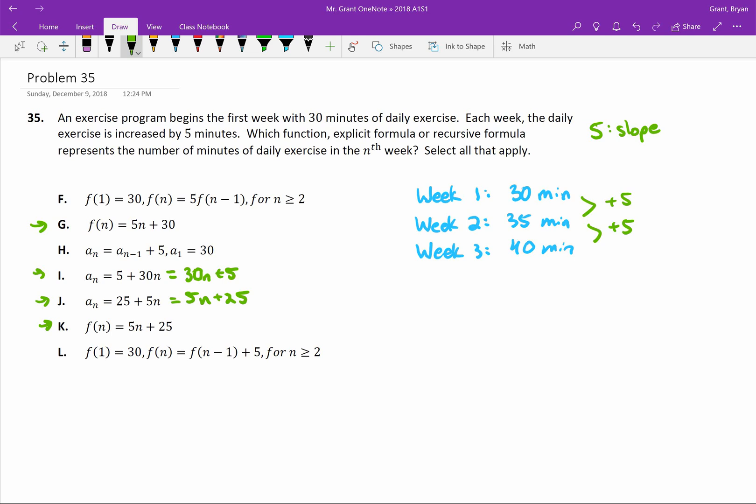They are very similar to each other. In fact, this 5N + 25, J and K are the same problem. It doesn't matter that there's something different out front, A sub N versus F of N. It's all about the equation. Let's see if we can figure out which ones of these match. We know that when we substitute in the number 1, our answer better be 30. When we substitute in 2, our answer better be 35.